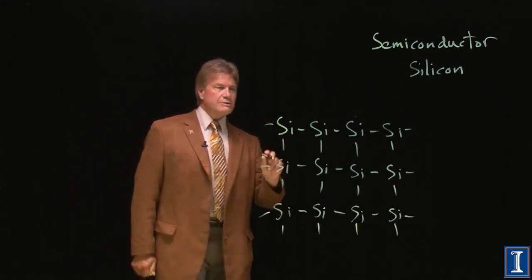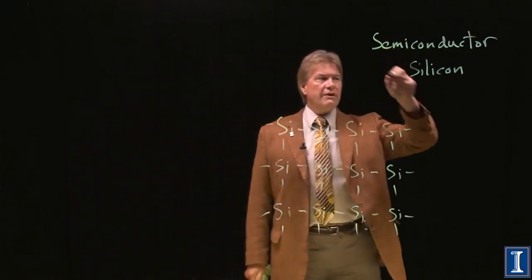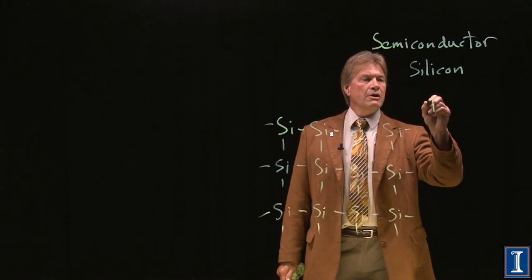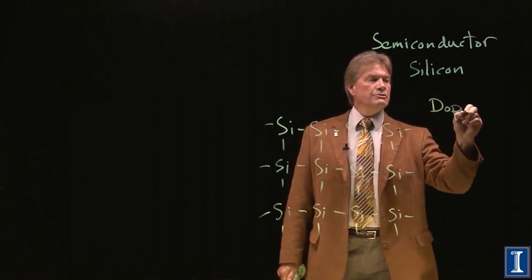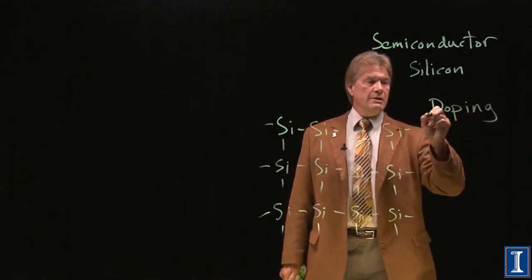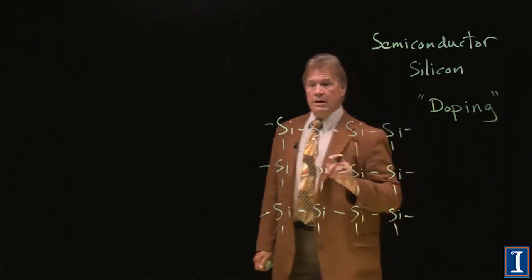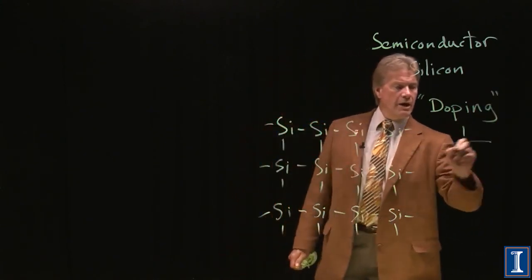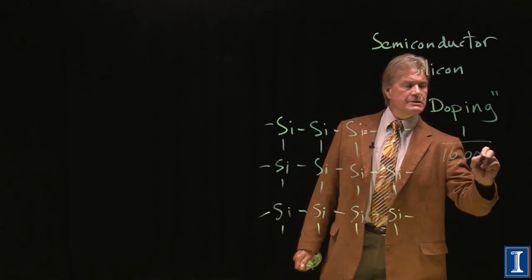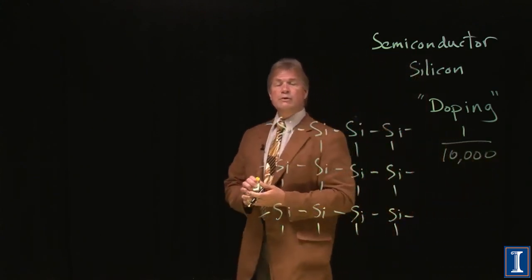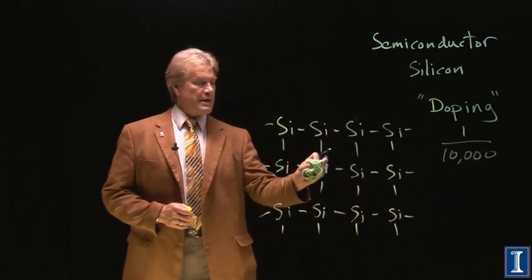You see, to make a solar cell, not only do we have to start with a semiconductor, we next need to dope it. We have to do doping. It means something like one out of 10,000 silicon atoms needs to be replaced by something else.